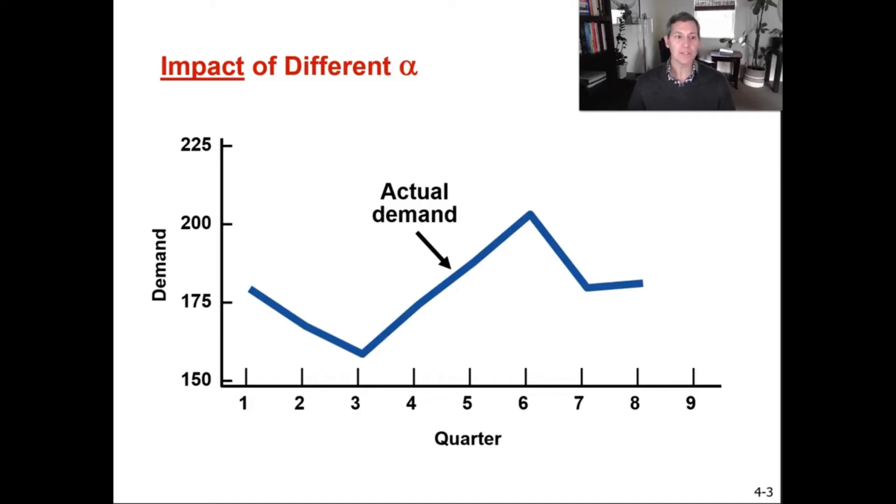So here's the impact of that smoothing constant. You can see in this example, demand goes down and then demand goes up and then it goes down again. So you can see there's this line of down, up, down. Sure there's a little bit of a trend of things going up, but in general it has gone down, then up, then down. And so when picking that alpha,